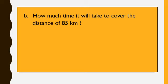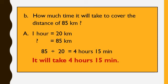Now we will switch over to the last sum for today. How much time will it take to cover the distance of 85 km? Children, it is already given that in 1 hour the tractor covers a distance of 20 km. So in how many hours will the tractor cover the distance of 85 km? Here also we will apply the same method of cross-multiplying and dividing. So I will cross-multiply 85 and 1: 85 ones are 85. Then I will divide by 20. So 85 divided by 20, I get 4 hours 15 minutes. So the tractor will take 4 hours 15 minutes to cover the distance of 85 km.